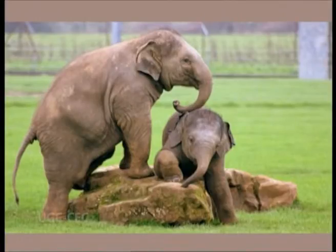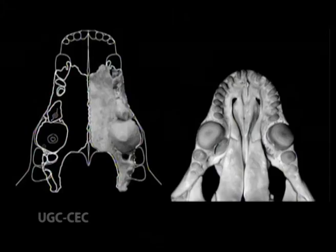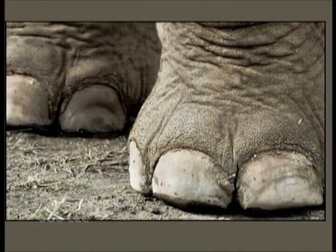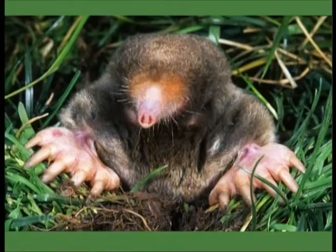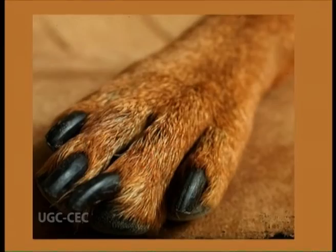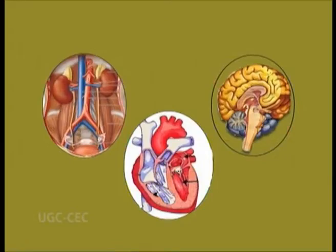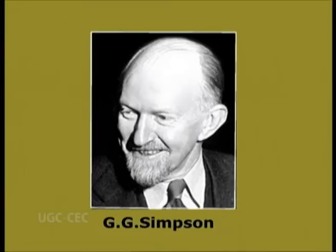The classification is based on: mode of caring for the young ones, nature of their dentitions, foot posture, nails, claws and hoofs, complexity of the nervous system, and systematics. Here we are going to study the classification provided by G.G. Simpson.